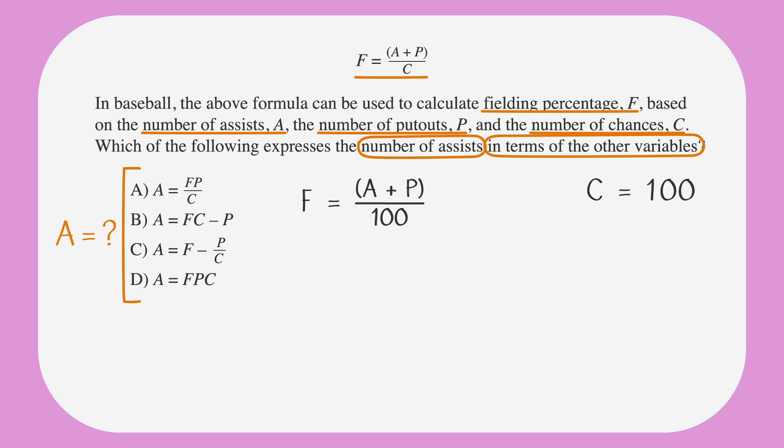Remember, we need to pick a different number for each variable. Let's say A equals 20 and P equals 30. So F equals 20 plus 30 over 100, which simplifies to 50 over 100, and we can reduce that to F equals one half.